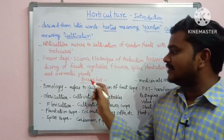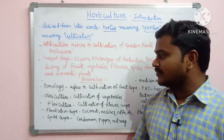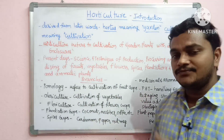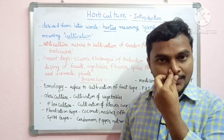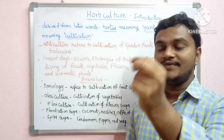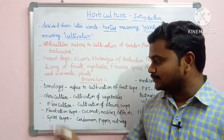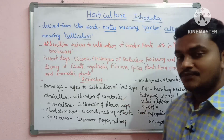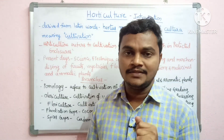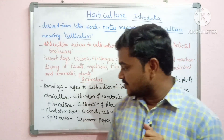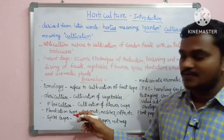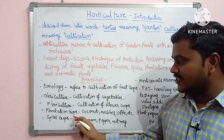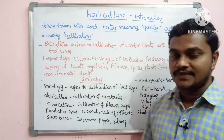The branches of horticulture include: Pomology, which refers to the cultivation of fruit crops; Olericulture, which is the cultivation of vegetables; and Floriculture, which is the cultivation of flower crops. Plantation crops include coconut, rubber, and coffee.